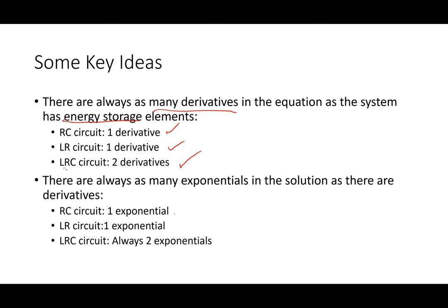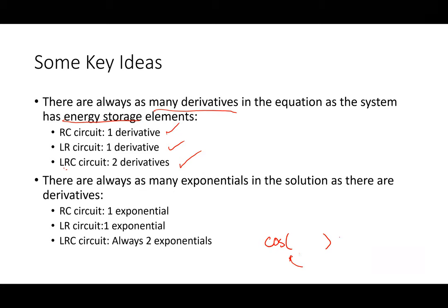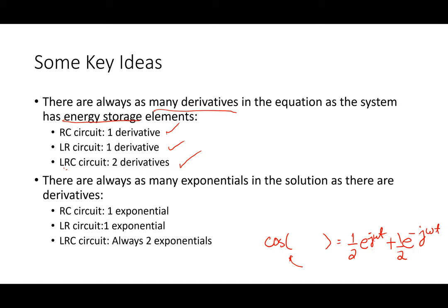You guys have seen RC circuits where you had transient solutions that had cosines. What's a cosine? It's the real part of an exponential. It's also two exponentials. There are always two exponentials. So we're going to keep going with this idea and look at an example today where we can see how useful the complex stuff becomes.